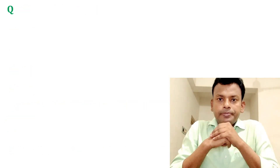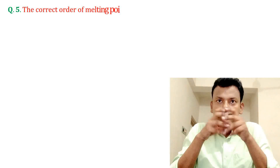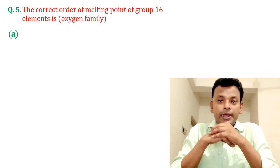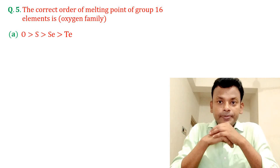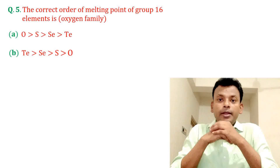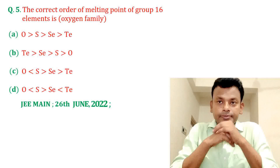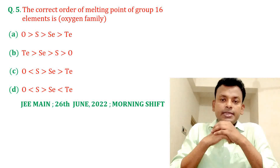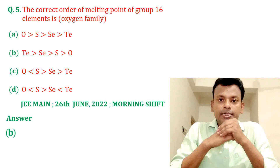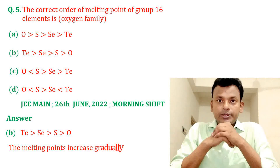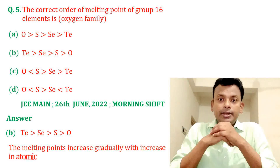Question number five: the correct order of melting point of Group 16 elements, that is the oxygen family. Options A, B, C, and D are given. Answer: option B is correct, that is Te > Se > S > O. The melting point increases gradually with increase in atomic number.